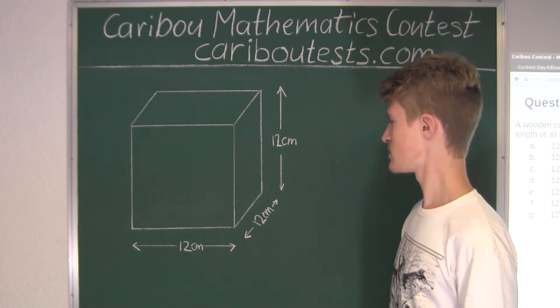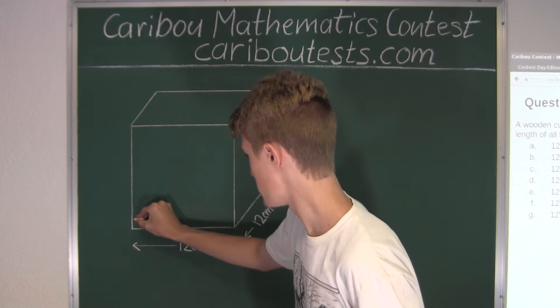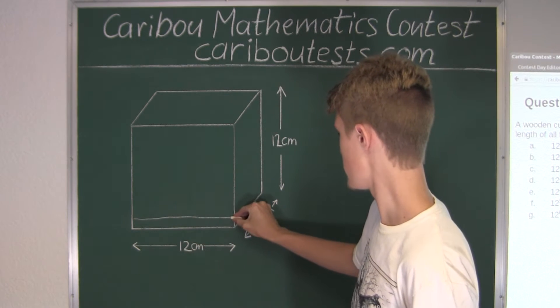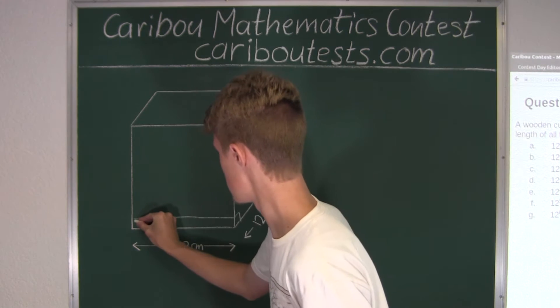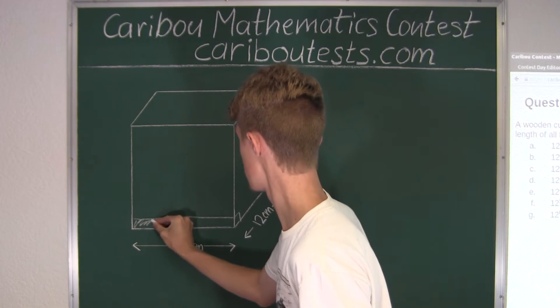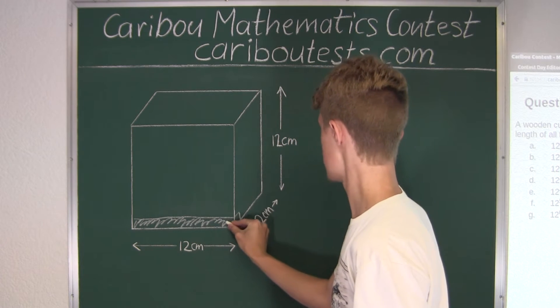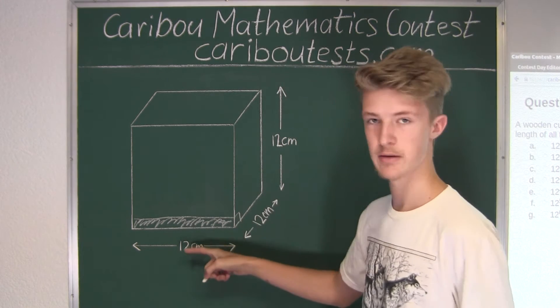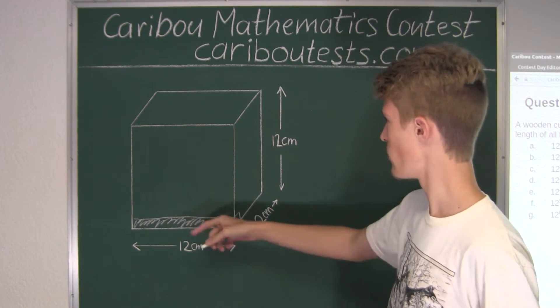Alright, so now for the bottom, we would have 12 cubes here. So this is 12 cubes, because the large edge is 12 cm and the edge of a small cube is 1 cm. So 12 divided by 1 is 12.